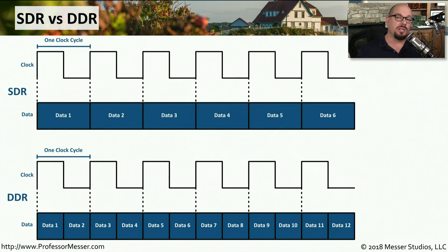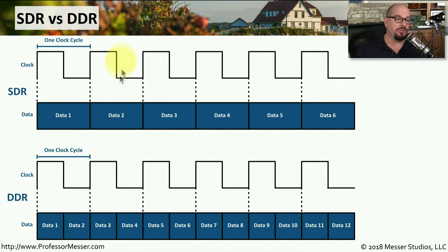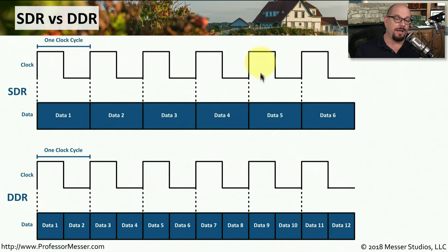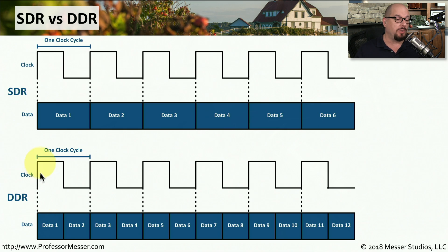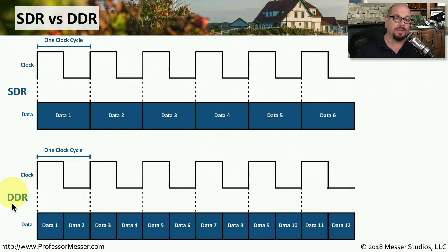Here's how we use clock cycles to pull information off of memory. In single data rate memory, or SDR, we have a single clock cycle — you can see the up and down wave of the clock cycle. Through each single clock cycle, we can pull one bit of data, so with six different clock cycles, we can pull six different pieces of data. With dual data rate memory, we still have the same clock cycle, but the difference is that we're able to pull information on the upside of the clock cycle and the downside of the clock cycle, meaning there are two different bits of data we can gather in the same clock cycle. That's where the 'double' in double data rate comes from.